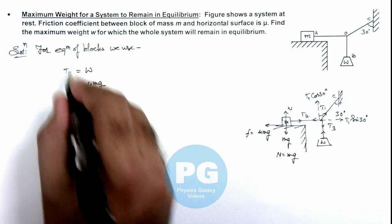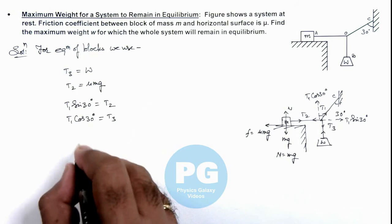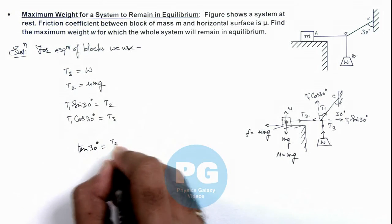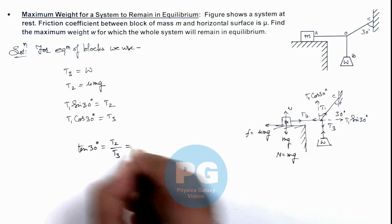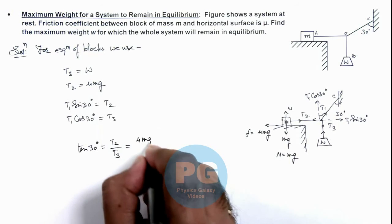The value of t2 and t3 we already know, so if we divide the two, then we can see this will give us tan 30 degrees is equal to t2 by t3. So if we substitute the values of t2 and t3, this will give us mu mg by w.